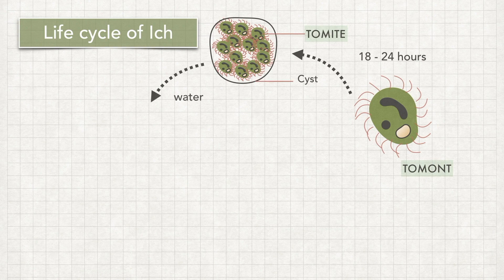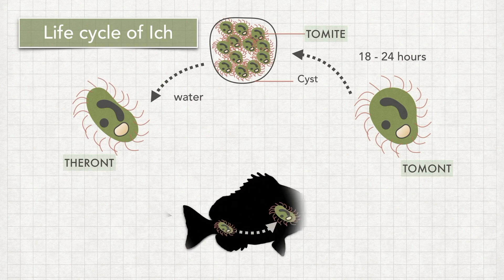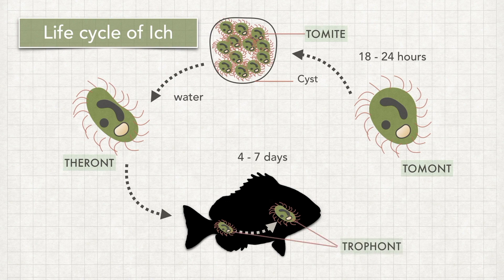The tomites will elongate and become theronts, which swim to find a new host within one day. Once they have found the host fish, they will penetrate the fish epithelium and become trophonts within 4 to 7 days, feeding on the host cells to survive. And then the cycle will start all over again.